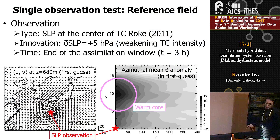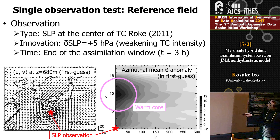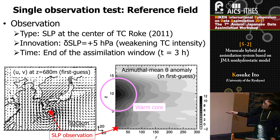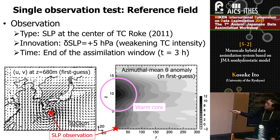Let me explain the single observation test result. Here is a tropical cyclone first-guess field, showing a swirling wind field, and radial-height cross-sections. A tropical cyclone is equipped with a warm core, so we see the azimuthal mean potential temperature deviation in the upper troposphere. We add a sea level pressure observation at the center of the TC with an innovation of 5 hectopascals, which weakens the TC intensity. This observation is introduced at the end of the assimilation window, three hours from the beginning.